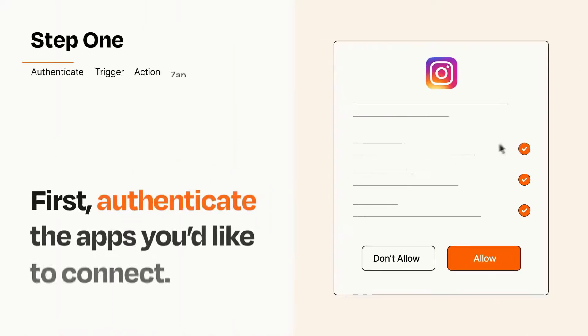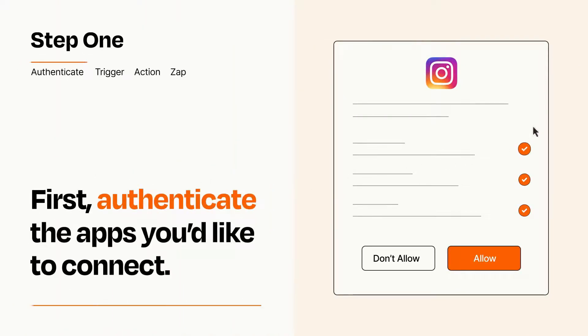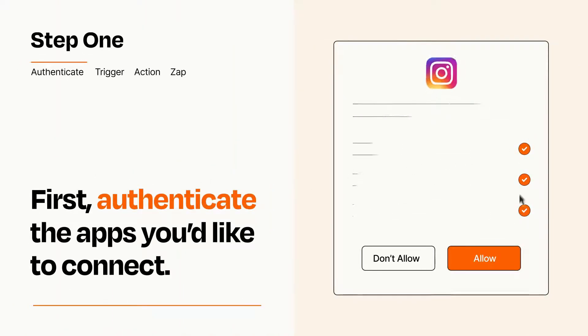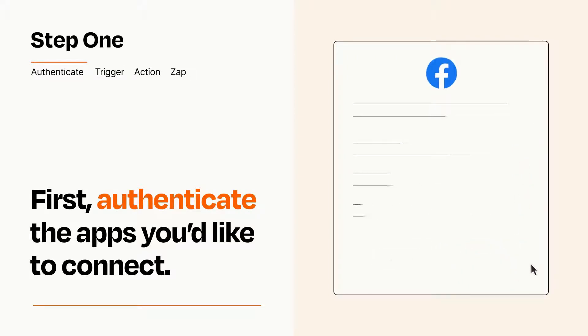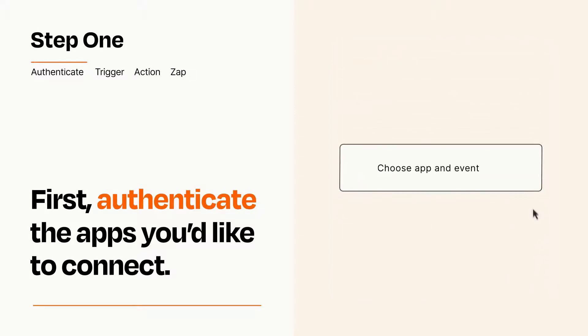It's easy. To get started, you'll just need to authenticate your apps, which takes just a few seconds. Zapier meets industry standards for encryption when connecting with each of your apps.